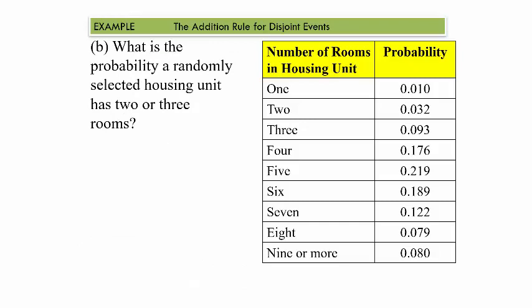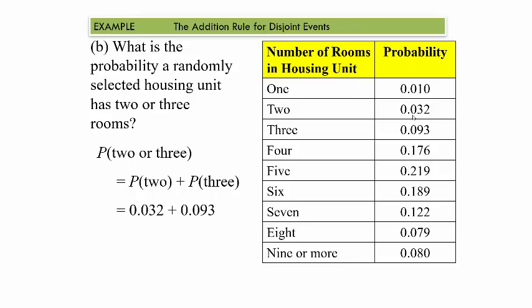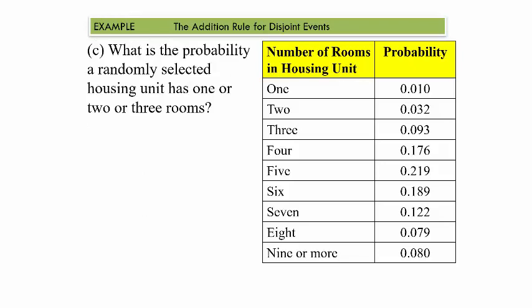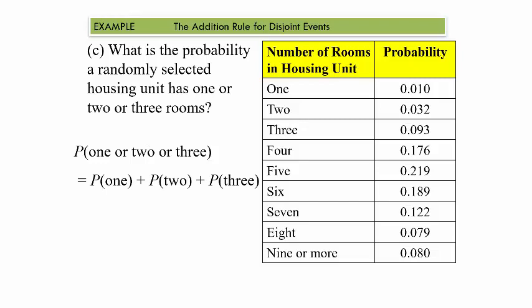What is the probability that a randomly selected housing unit has two or three rooms? These events are disjoint because a unit can't have both two and three rooms simultaneously. So the probability of two or three rooms equals the probability of two rooms plus the probability of three rooms, which gives 0.125. As a follow-up, the probability of one or two or three rooms — since all are disjoint — you just sum those three probabilities to get 0.135.